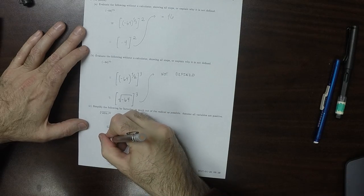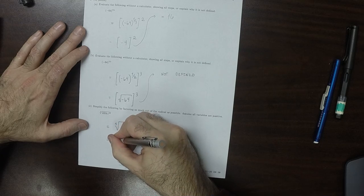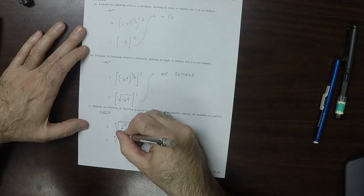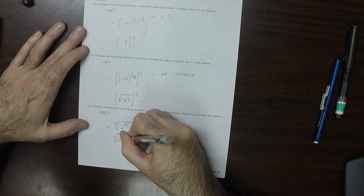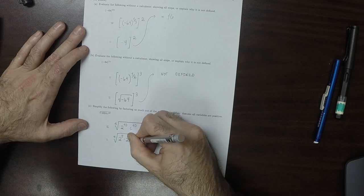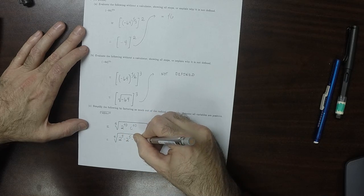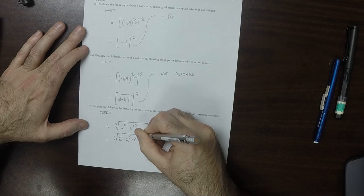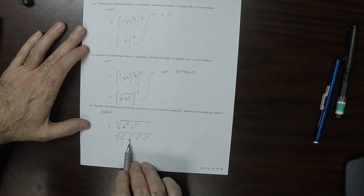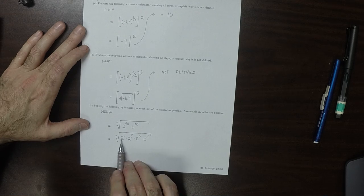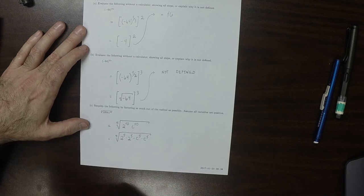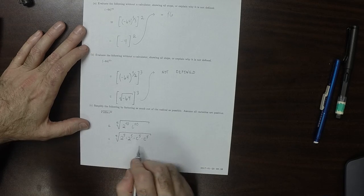We can write this as the 5th root of 2 to the 5th times 2 to the 5th times C to the 5th times C to the 5th. We've grouped these in fives, so that's 2 times 2 times 2 times 2, and similar for the C's. All of these can come out.